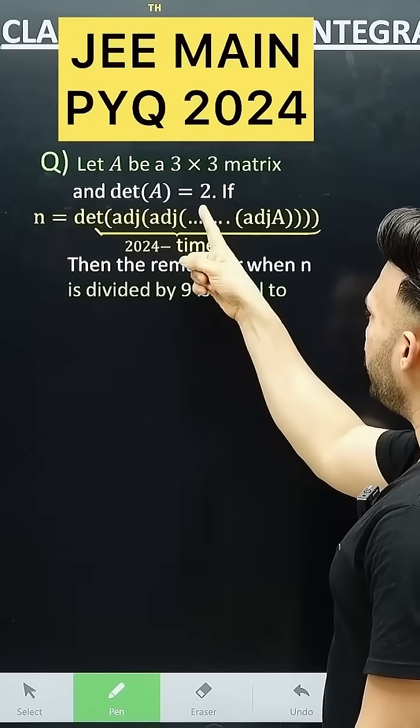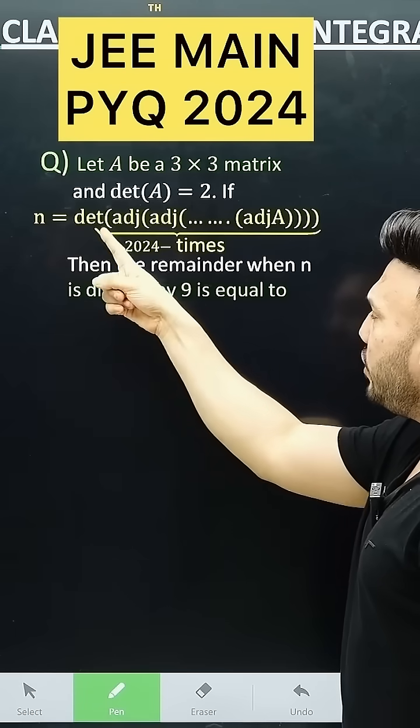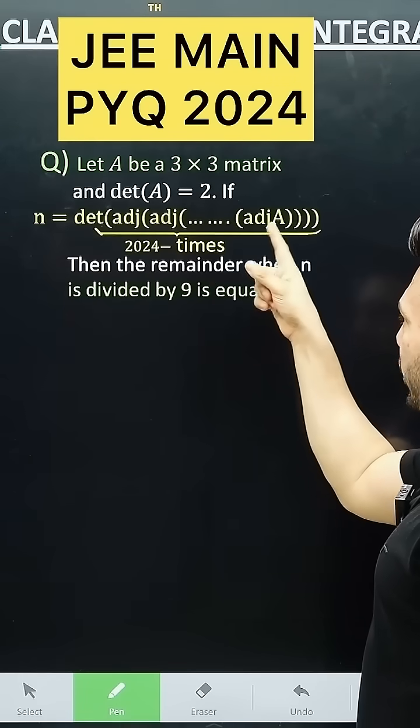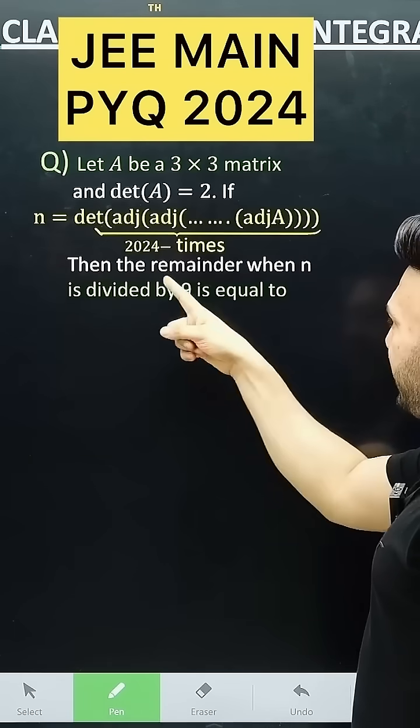Let A be a 3 by 3 matrix and determinant of A equals 2. If n equals determinant of adjoint, adjoint, adjoint A, then the remainder when n is divided by 9.